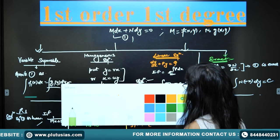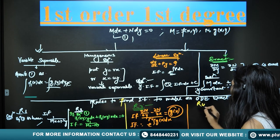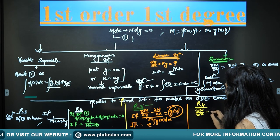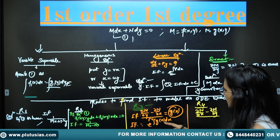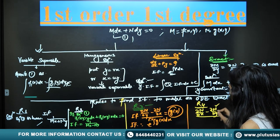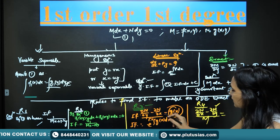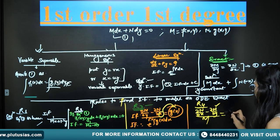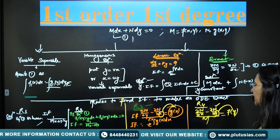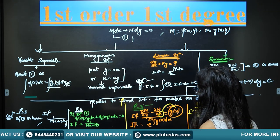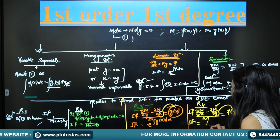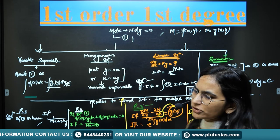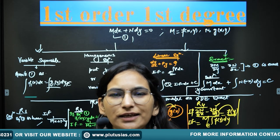Rule 4 is on similar lines. Compute (∂N/∂x − ∂M/∂y) and divide by M — here the divisor is M instead of N. If this expression turns out to be a function of y only, call it f(y), then the integrating factor is e raised to the power of ∫f(y) dy.